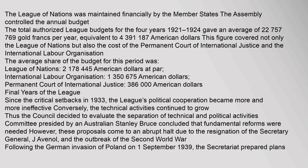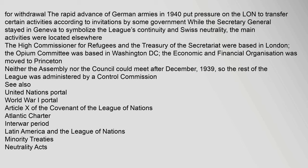Since the critical setbacks in 1933, the League's political cooperation became more and more ineffective. Conversely, the technical activities continued to grow. The Council decided to evaluate the separation of Technical and Political Activities; a committee presided by Australian Stanley Bruce concluded that fundamental reforms were needed. However, these proposals came to an abrupt halt due to the resignation of the Secretary-General, Jay Avenal, and the outbreak of the Second World War following the German invasion of Poland on 1 September 1939. The Secretariat prepared plans for withdrawal; the rapid advance of German armies in 1940 put pressure on the League to transfer certain activities. The High Commissioner for Refugees and the Treasury were based in London; the Opium Committee in Washington, D.C.; and the economic and financial organization was moved to Princeton. Neither the Assembly nor the Council could meet after December 1939, so the rest of the League was administered by a control commission.